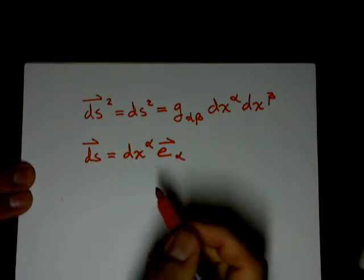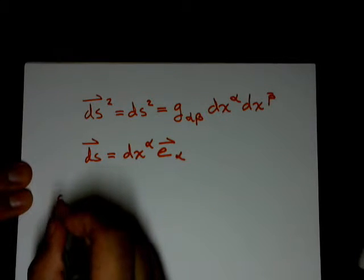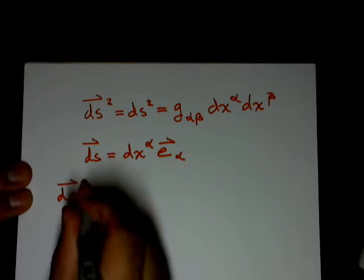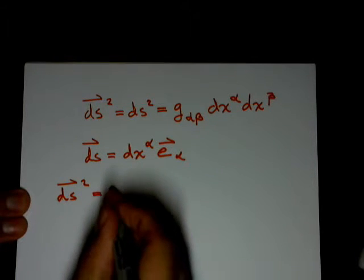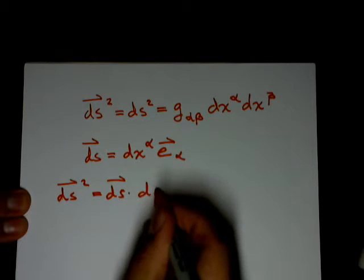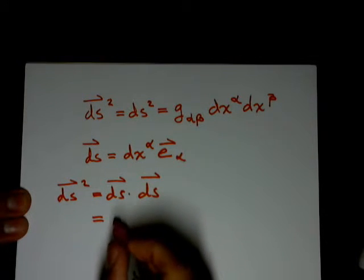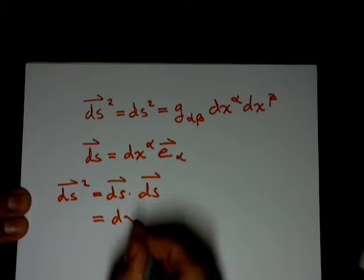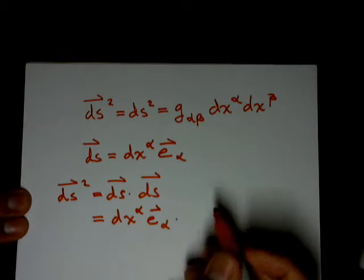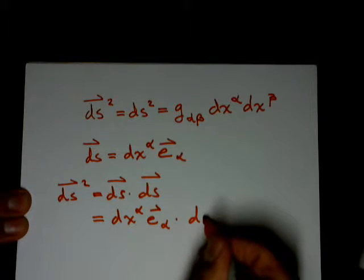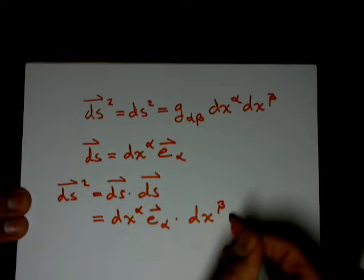Now, we're going to dot it into itself, so that's going to give us ds dot ds, which is going to equal to... and we're going to need to change the indices, the labeling, but they both represent the same thing.